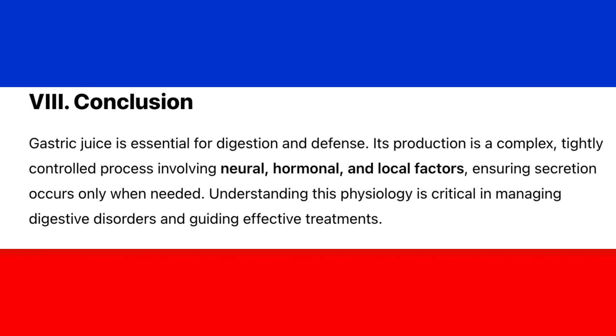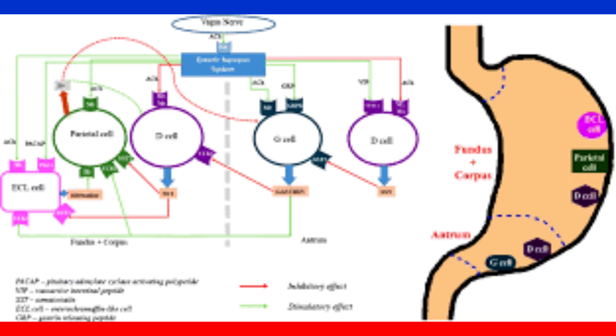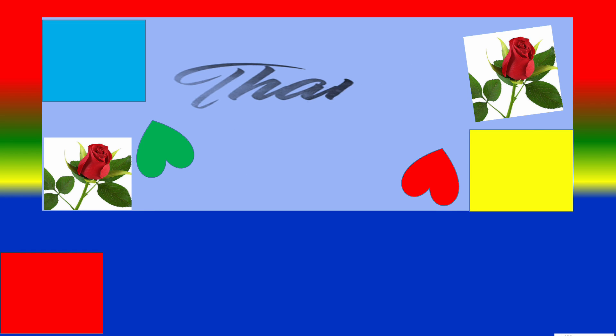Conclusion: Gastric juice is essential for digestion. Its production is a complex, tightly controlled process involving neural, hormonal, and local factors, ensuring secretion occurs only when needed. Understanding this physiology is critical in managing digestive disorders and guiding effective treatments. Thank you. Have a nice day.